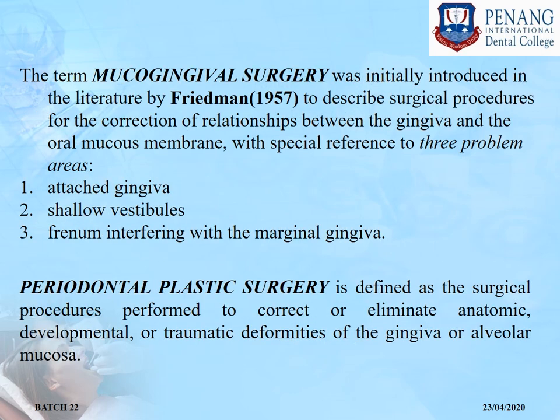Starting with the definitions: the term mucogingival surgery was initially introduced in literature by Friedman in 1957 to describe surgical procedures for the correction of relationships between the gingiva and the oral mucous membrane, with special reference to three problem areas: first, attached gingiva; second, shallow vestibule; third, frenum interfering with the marginal gingiva.